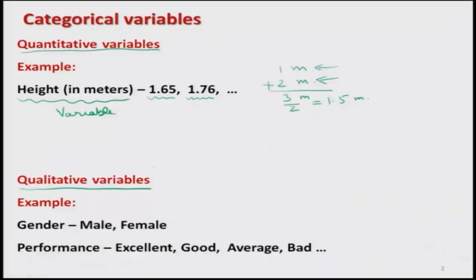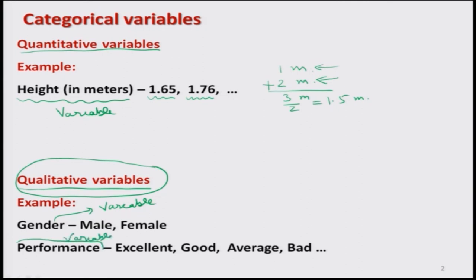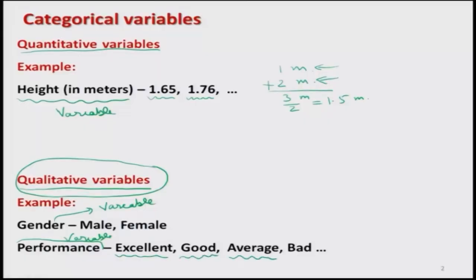Another type of variable is the qualitative variable. For example, suppose I have a group of persons and I classify them into two groups: male and female. My variable here is gender, giving two types of values: male and female. Similarly, I can define another variable called performance — in an exam, a sports event, or anywhere. Performance cannot be measured numerically, but can be classified as excellent, good, average, or something else.